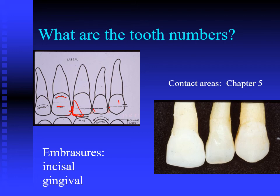One concept that Dr. Chung talked about earlier is the concept of embrasure — the V-shaped space that emanates from an interproximal contact. We teach the concept that embrasures are mirror images, so if I draw a line down the center of the embrasure, this side would be a mirror image of the distal side of the embrasure.